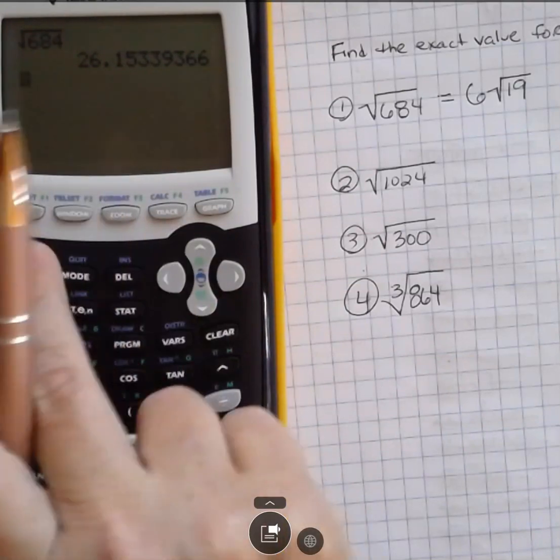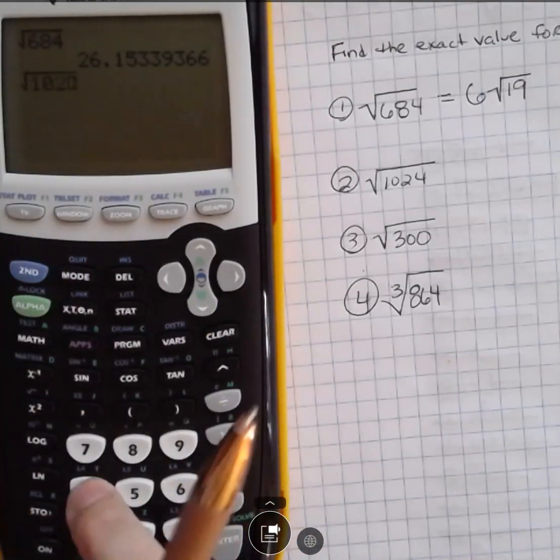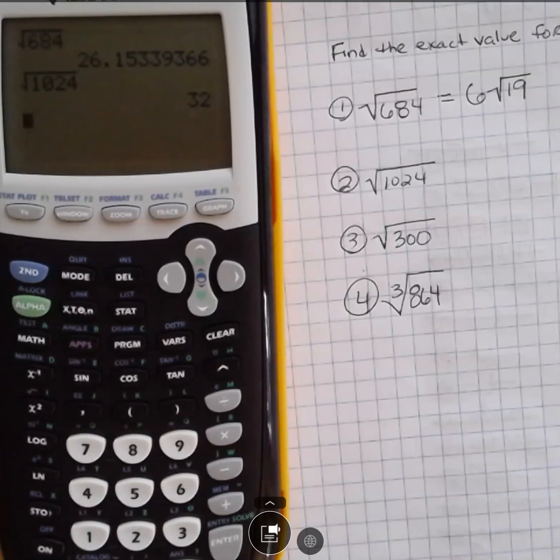If so, you don't need to go through all that trouble. Second function, square root, 1024. And it is a perfect square root of 32.